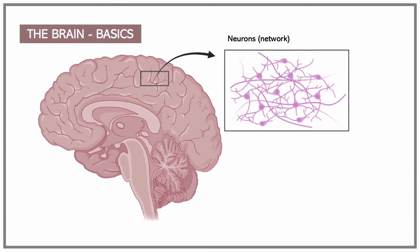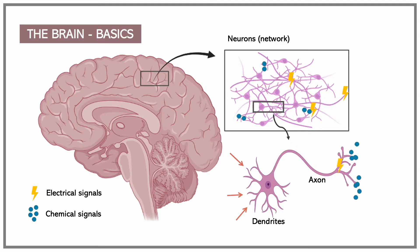To understand how learning occurs in the brain, we need to start with the basics. Our brain consists of billions of neurons. These neurons have dendrites, which receive information, and an axon, which sends information. Neurons communicate with each other via electrical and chemical signals.